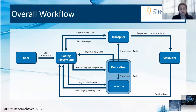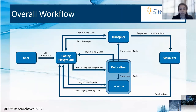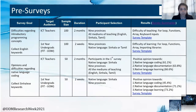A user will usually interact with Simply by the coding playground or the web-based platform through code submissions. If it is an English Simply code, it will be sent to the transpiler and the relevant result or error messages will be returned. A native language Simply code will first be converted to English by the language method's delocalizer before being transpiled. If a user wishes to view the native language version of an English Simply code, they must send it to the localizer component of the method, where it will return the relevant native language Simply code. Any transpiled code can also be sent to the visualizer to obtain runtime data information.